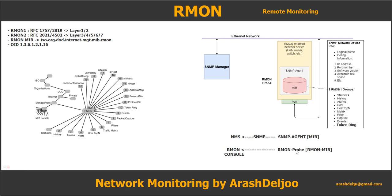In RMON, we also have an RMON probe — which is like the SNMP agent — and an RMON console, which is like the NMS. Because of that, the RMON probe should gather information related to the traffic, not related to the device, from the RMON MIB, and after gathering, that information should be sent to the RMON console.